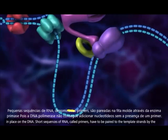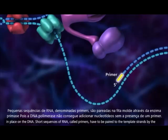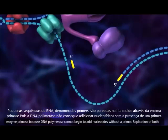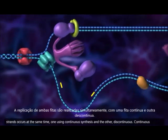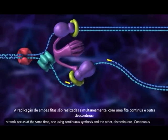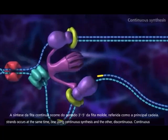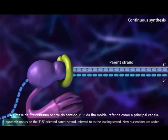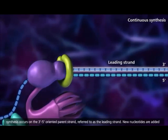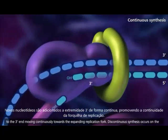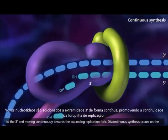Short sequences of RNA, called primers, have to be paired to the template strands by the enzyme primase, because DNA polymerase cannot begin to add nucleotides without a primer. Replication of both strands occurs at the same time, one using continuous synthesis and the other discontinuous. Continuous synthesis occurs on the 3' to 5' oriented parent strand, referred to as the leading strand. New nucleotides are added to the 3' end, moving continuously toward the expanding replication fork.